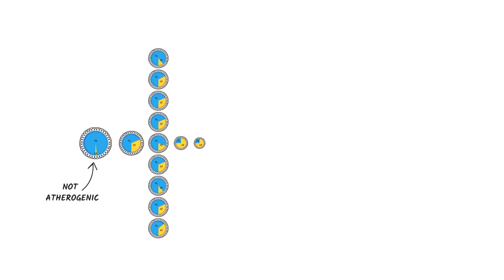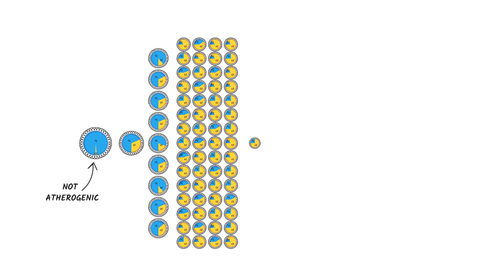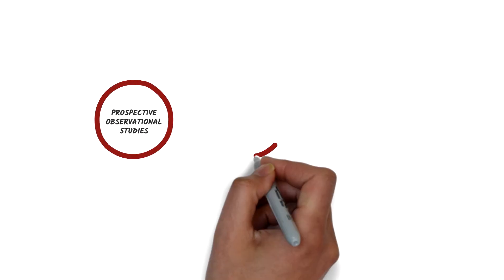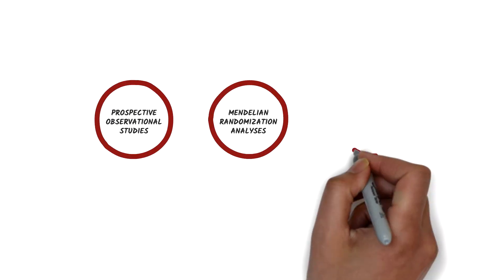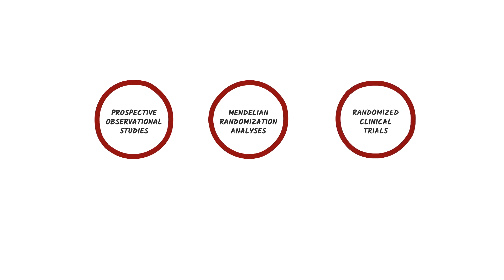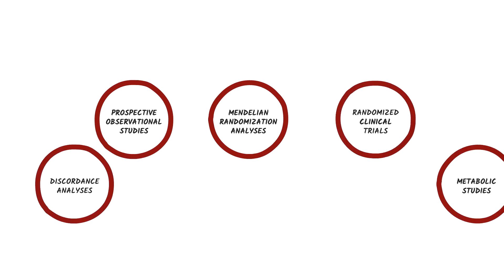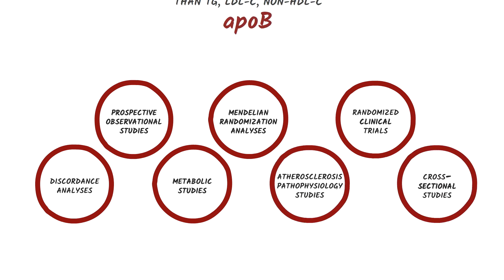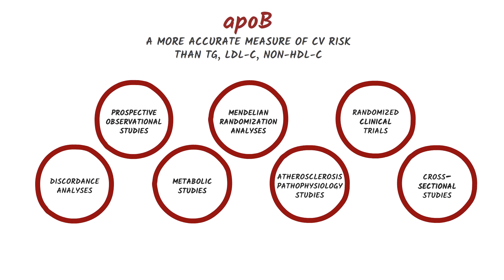Of course, that number will include all classes of ApoB lipoprotein particles, but the vast majority of them will be LDL and VLDL particles, which are equally atherogenic. So it's no surprise that prospective observational studies, Mendelian randomization analyses, randomized clinical trials, discordance analyses, and a series of other studies have all shown clearly that ApoB is a more accurate measure of cardiovascular risk than triglycerides, LDL-C, or even non-HDL-C.